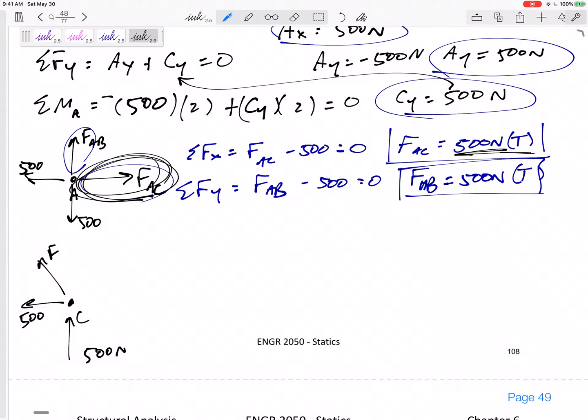All right, then we have the force in member BC, and it is at a 45 degree angle. I know it's in this direction. It could be pulling or pushing. I always like to guess pulling, I like to guess tension first.